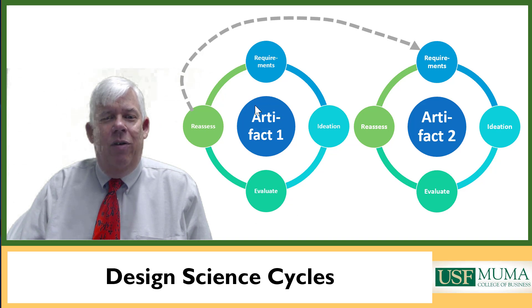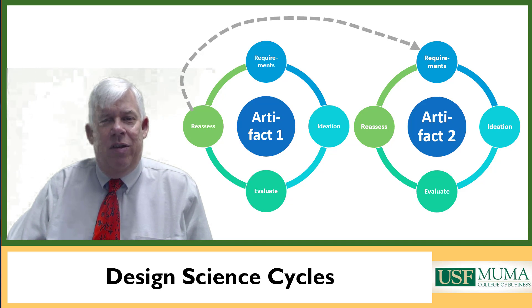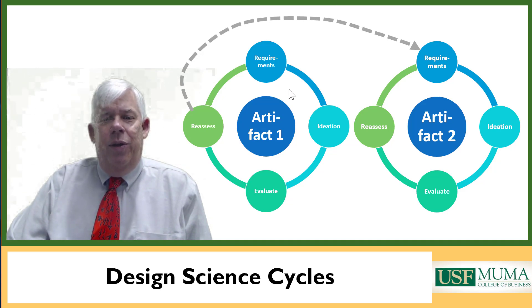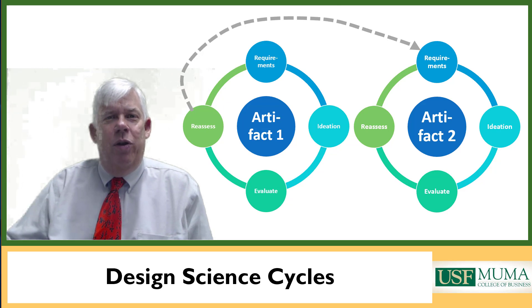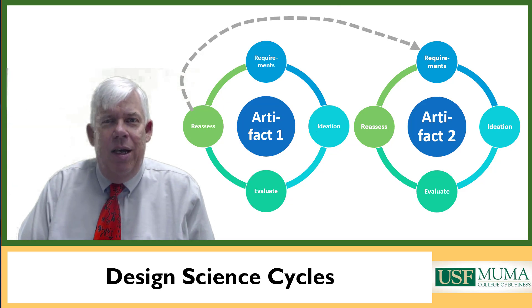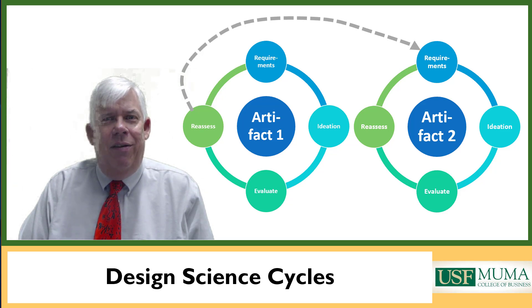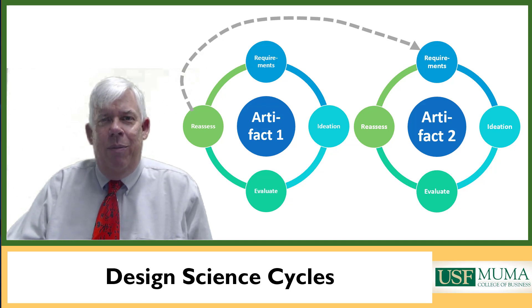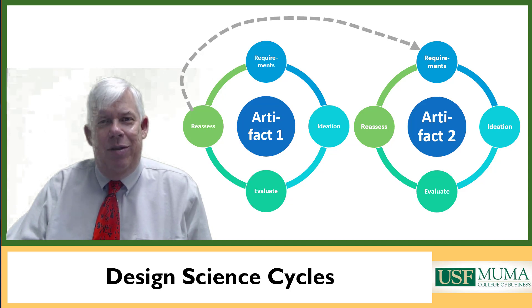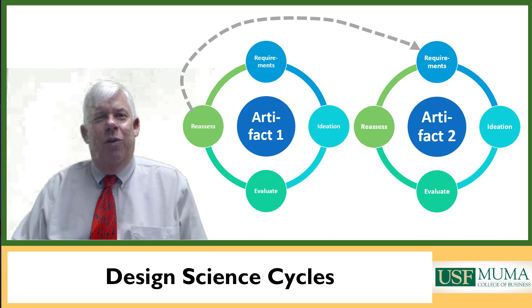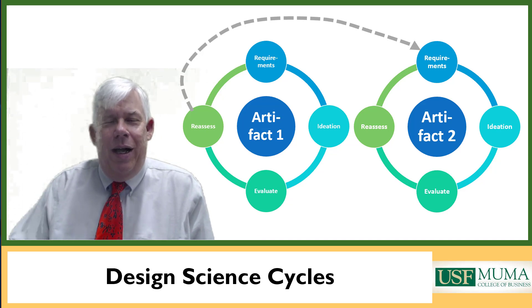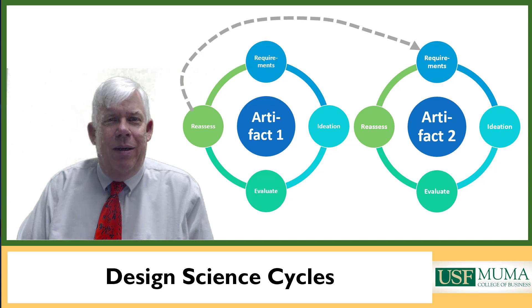So you might have one cycle to create a set of requirements and then another cycle to create an artifact that meets the requirements. You will then have some sort of ideation process where you come up with ideas to be incorporated in the artifact — this is the creative aspect of design. Different methods of design science will have different names for these things, so use the names from whatever articles you're referencing.